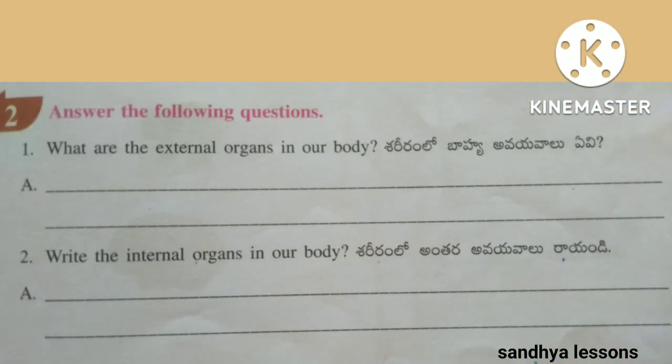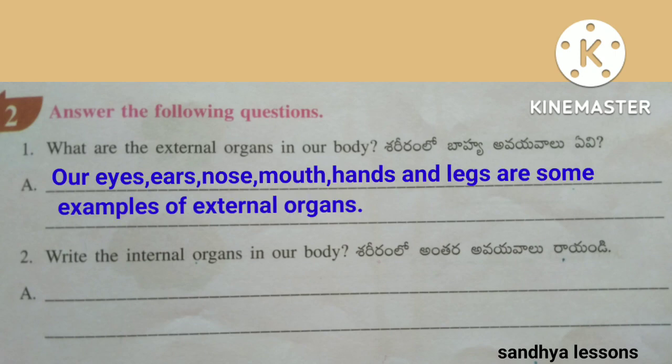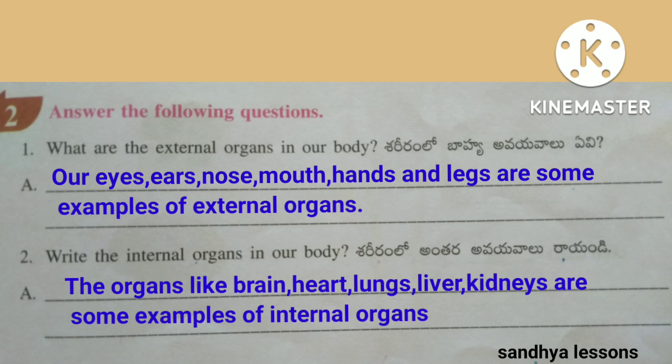Second, answer the following questions. First question: What are the external organs in our body? Our eyes, ears, nose, mouth, hands and legs are some examples of external organs.